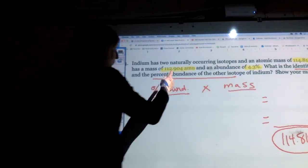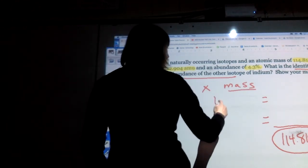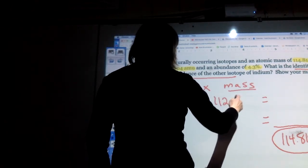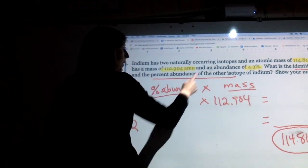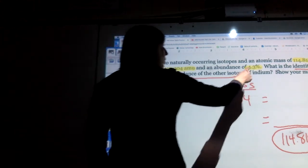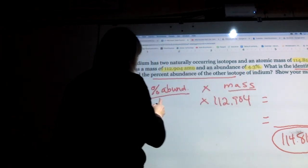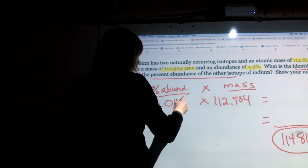So I'm just going to go back up to the problem and say okay, I have this one with a mass of 112.904 and I need to multiply that times the percent abundance which is 4.3%, so if I move the decimal over two places it becomes 0.043.